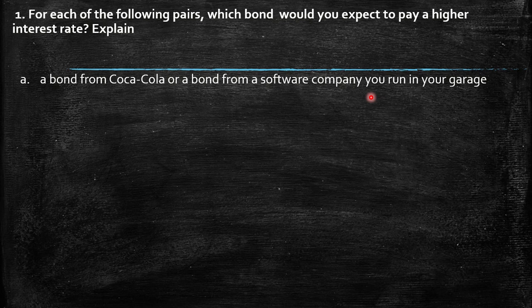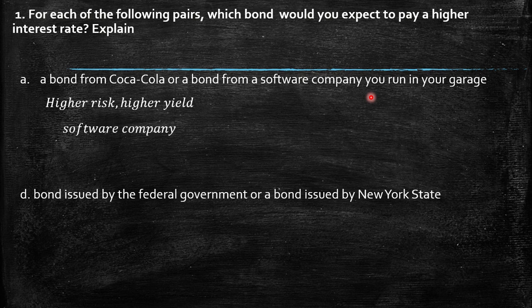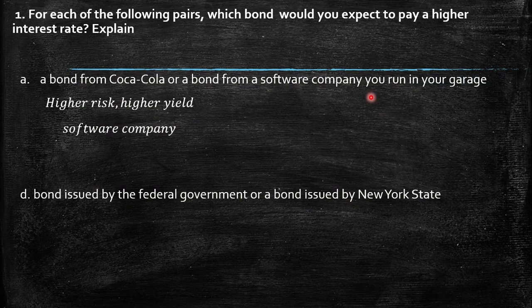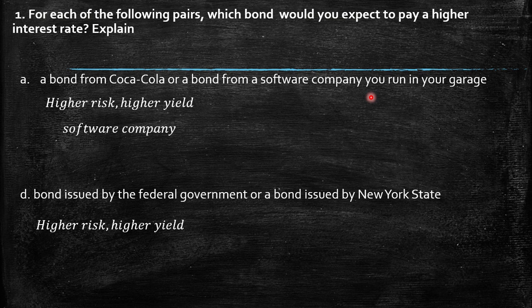Part C: a bond from Coca-Cola or a bond from a software company you run in your garage. Again, higher risk means higher yield. The garage software company bond could be considered a junk bond — it carries very high risk that the company may not repay. So the software company bond should offer the higher interest rate. Part D: a bond issued by the federal government or a bond issued by New York State. Assuming New York State is considered safer than the federal government, the federal government bond would be expected to provide the higher interest rate.